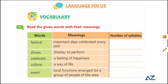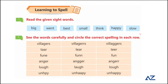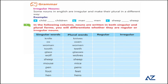Read the given side words: big, rank, best, small, think, happy, slow. Look at the words carefully and encircle the correct spelling in each row. Some spellings are given and you have to identify the correct ones. For example, in the first row the correct spelling is 'villagers,' then 'dear,' 'fun,' anger, laugh, unhappy. Find the correct spelling and circle it.